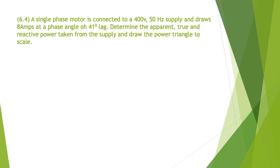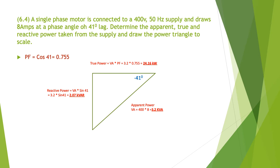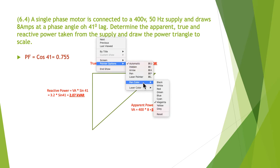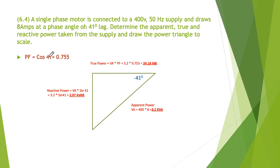6.4. A single phase motor is connected to a 400 volt 50 hertz supply and draws 8 amps at a phase angle of 41 degrees lag. Determine the apparent power, true and reactive power taken from the supply and draw the power triangle to scale. So straight away we need to find out what the power factor is. So that's the first thing we've done here, we've just gone cos 41 degrees and we've worked out the power factor is 0.755 or 41 degrees, that's in here.